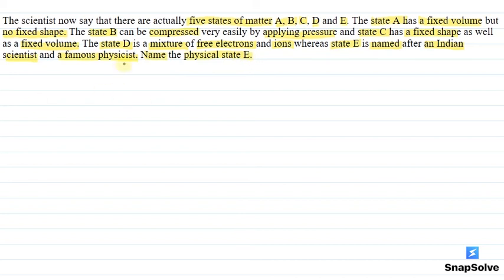So, this question asks us to name the physical state E and what information is given about physical state E, that it is named after an Indian scientist and a famous physicist which is a fifth state of matter.